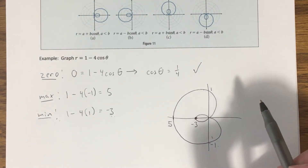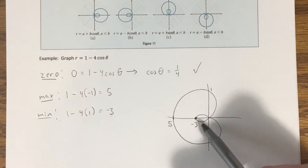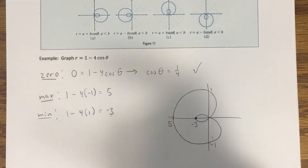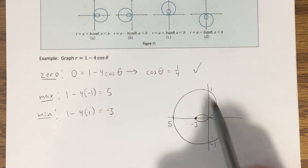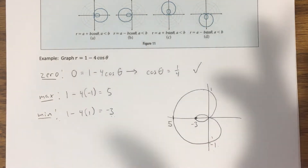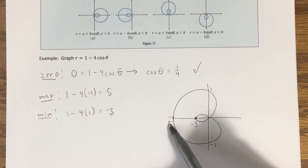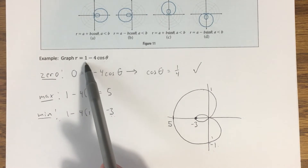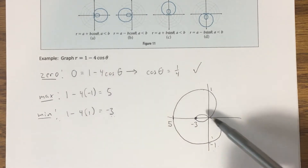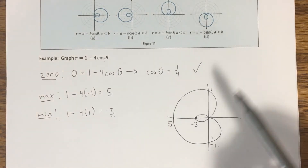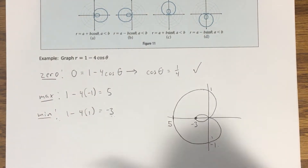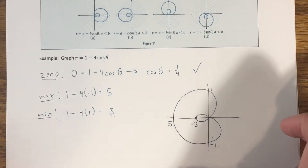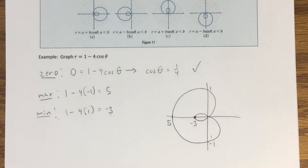It's not the scale that matters — it's getting the correct labels. For testing purposes, just drawing the shape gets no credit. What matters is the correct labels, because there are many inner-loop limaçons pointing the same direction that are different graphs due to different label values. Without labels, you just have a picture, not a graph.